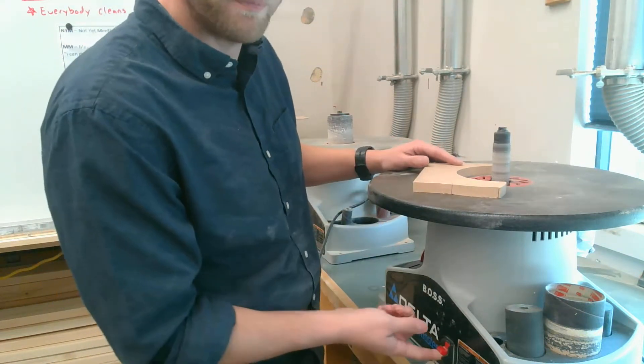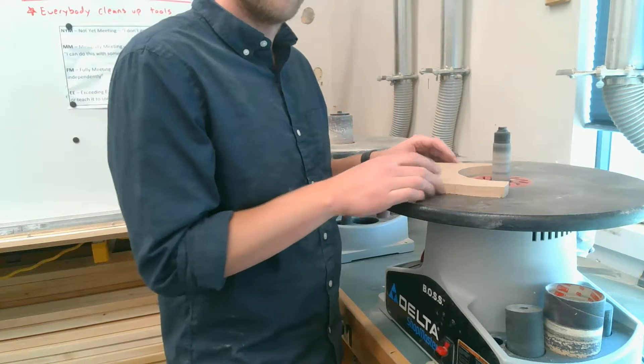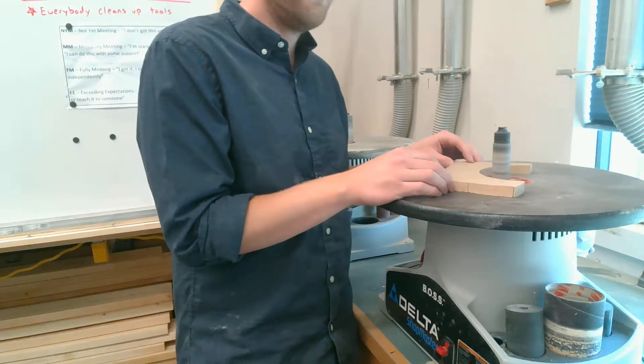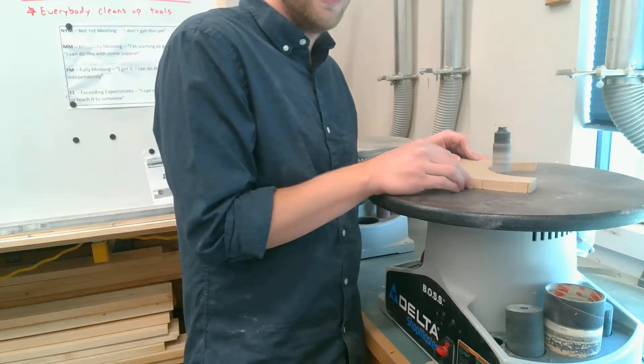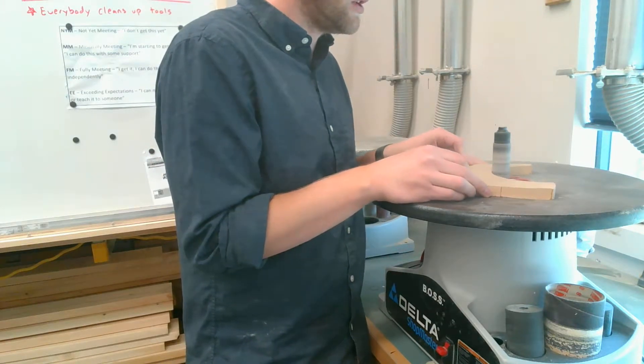So let's try it out. Turn the machine on. Again my fingers are always an inch from the sanding area. And I can use this to start sanding.